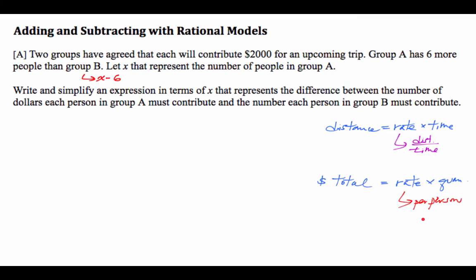So individually, how much you pay is the amount of money the group pays divided by number of people. Does that make sense? It's analogous to distance equals rate times time.